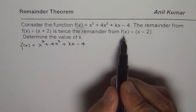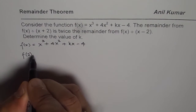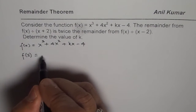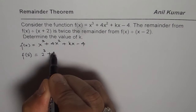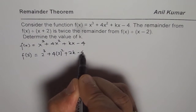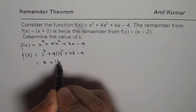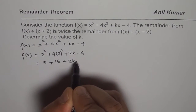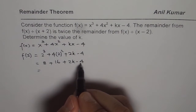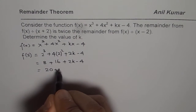Let us find the remainder when you divide f(x) by x minus 2. That will be the value of the function at f equals to 2. So when you substitute 2, you get 2 cubed plus 4 times 2 squared plus 2 times k minus 4. And that equals 8 plus 4 times 4 is 16 plus 2k minus 4. Let us combine all these terms: 8 minus 4 is 4 and 4 plus 16 is 20, so we get 20 plus 2k.